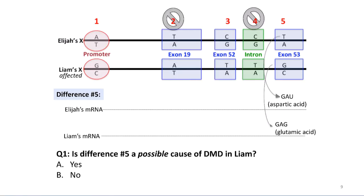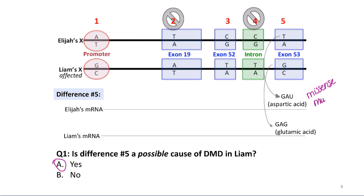Now let's focus on difference number five. Looking at the reading frame, for Elijah the codon is GAU, which encodes for aspartic acid. In Liam's X chromosome, we have GAG, which codes for glutamic acid. So at this position, Elijah has aspartic acid in his dystrophin protein while Liam has glutamic acid. This is a missense mutation because we have a change in amino acid. But let's take a closer look at the chemistry of aspartic acid and glutamic acid.